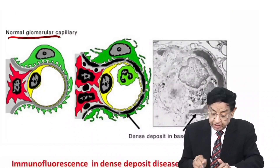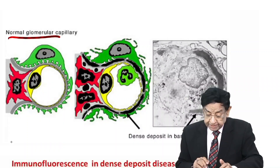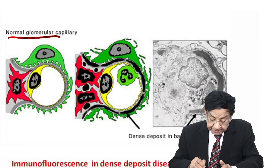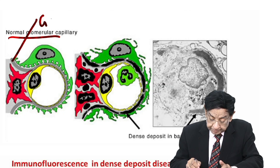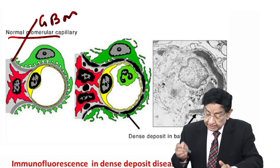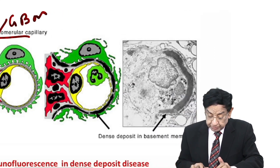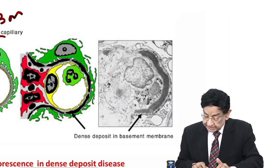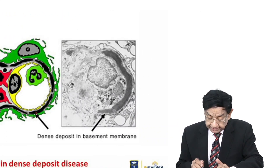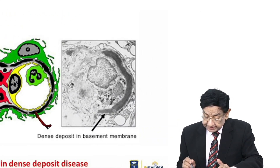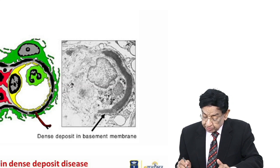This is a normal glomerulus capillary — you can see this is the basement membrane. Now you can see dense deposition occurring in the basement membrane, and this is an actual electron microscopy picture we are looking at.